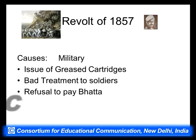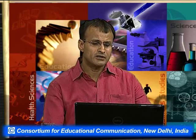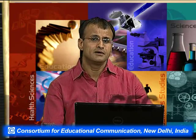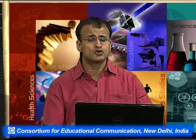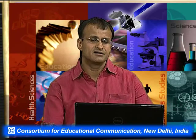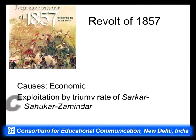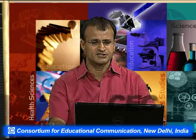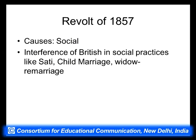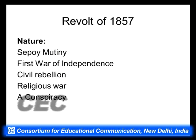From the political perspective, the Doctrine of Lapse caused concern to various princely states. Economically, the triumvirate of Sarkar, Sahukar, and Zamindar exploited Indian farmers and different sections of society, who were deeply unhappy with British economic policies. In social terms, British interference in practices like sati, child marriage, and widow remarriage was disliked by orthodox sections of society, who rejected such interference in these matters.